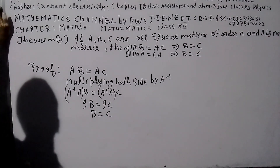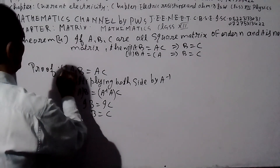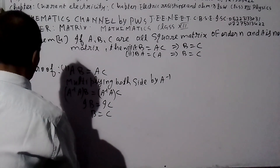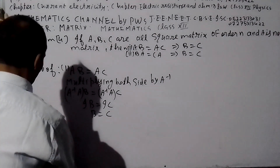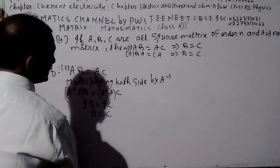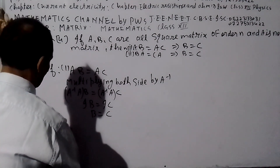This is the first part complete. Now the second part: BA = CA.